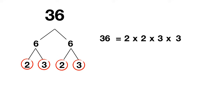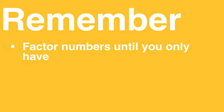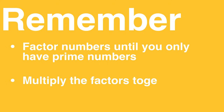And you can check, because 2 times 2 is 4, 4 times 3 is 12, and 12 times 3 is 36. So remember: factor numbers until you're left with only prime numbers, and then multiply the factors together to check your work.